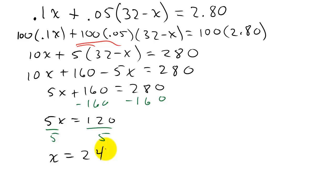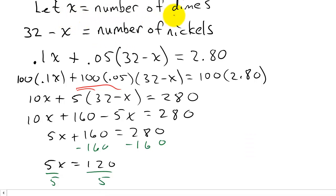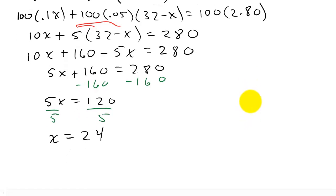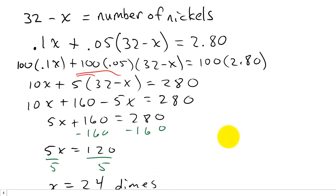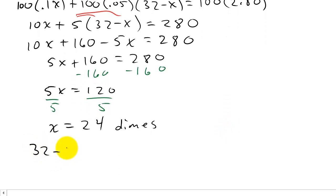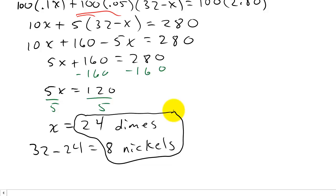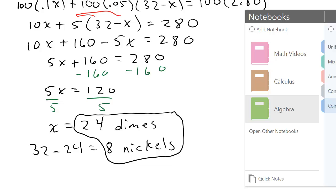So x equals 24, and x is the number of dimes, so we have 24 dimes. The number of nickels is 32 minus x, which is 32 minus 24, equals 8. So the answer is 24 dimes and 8 nickels. Let's take a look at one more problem.